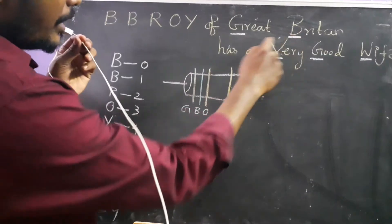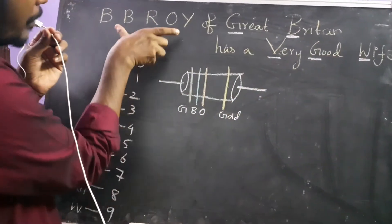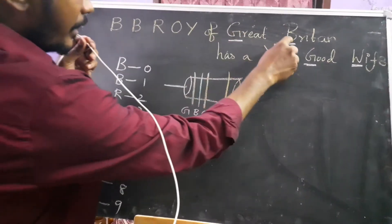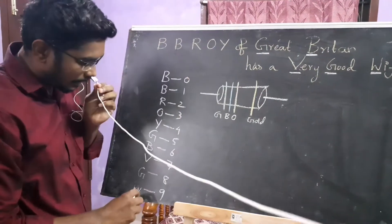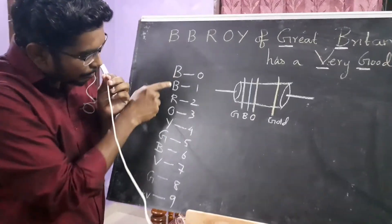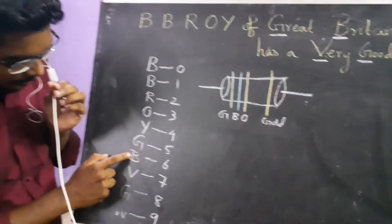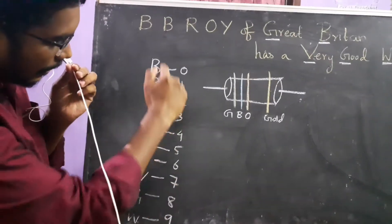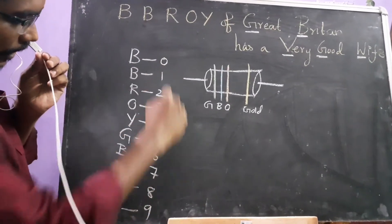BB Roy of Great Britain has a very good wife. If you look at the first letters, you can use numbers. BB Roy of Great Britain has a very good wife. If you say that, you can use the first letters 0 to 9 numbers.